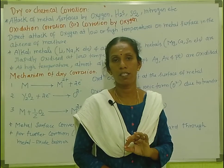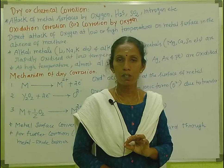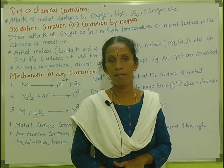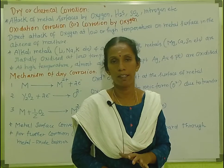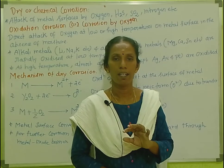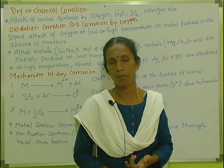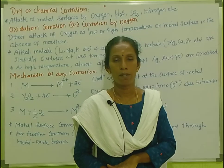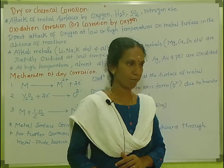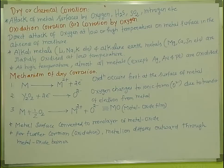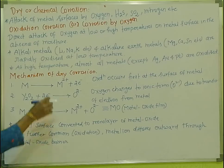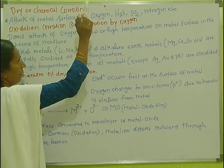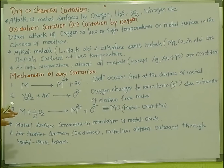Now we will talk about dry or chemical corrosion. Dry corrosion involves the attack of metal surfaces by gases. Metal is corroded on the surface.